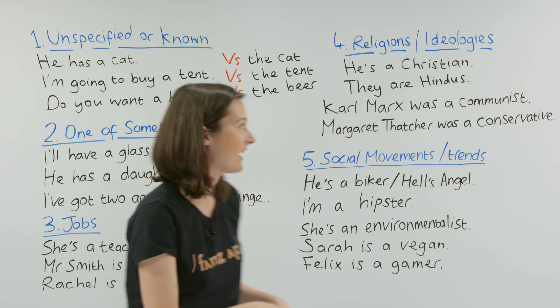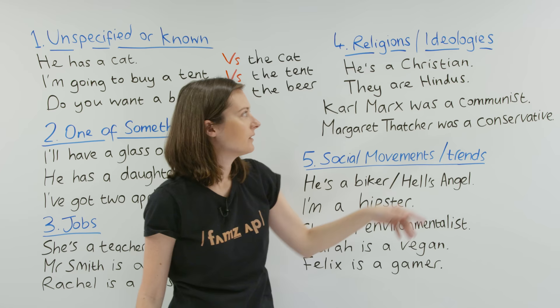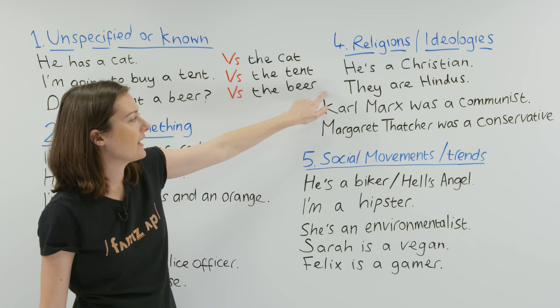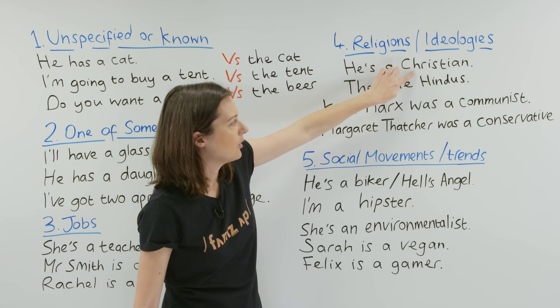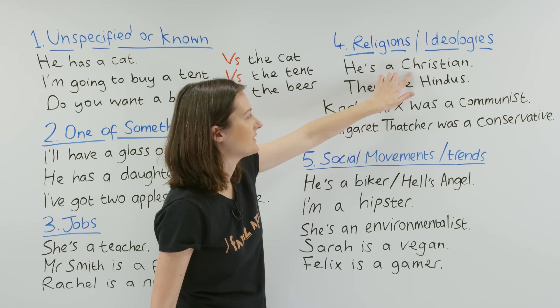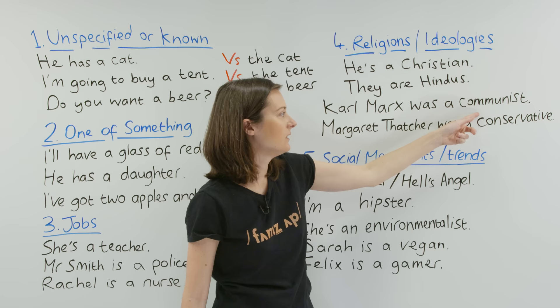Number four: religions or ideologies. We say 'he's a Christian' and 'they are Hindus'. A quick note: because these religions are names, we use a capital letter. Karl Marx was a communist and Margaret Thatcher was a conservative.